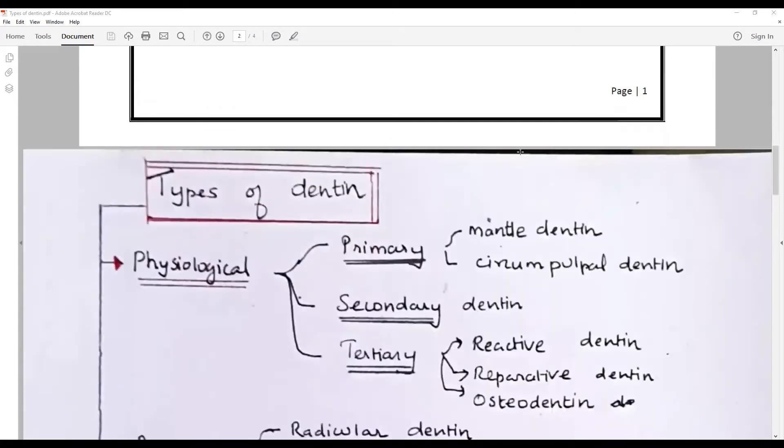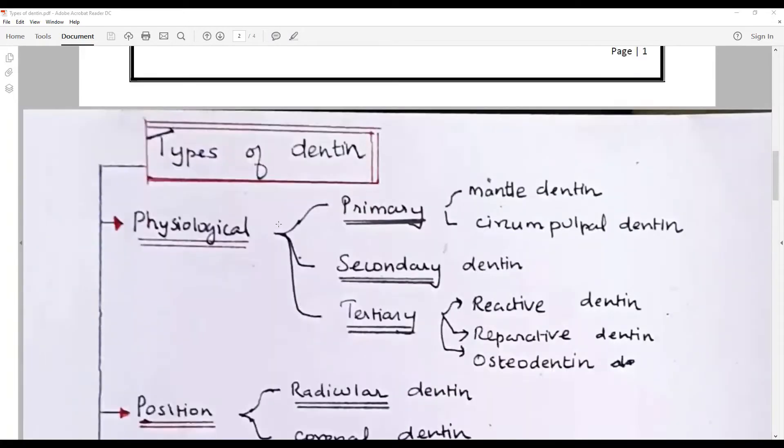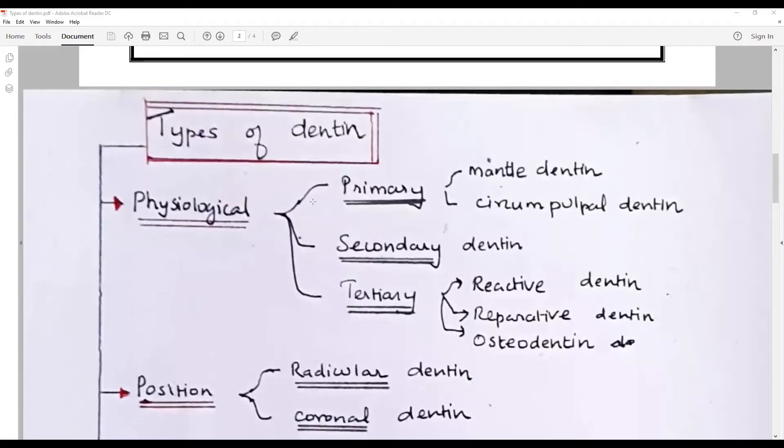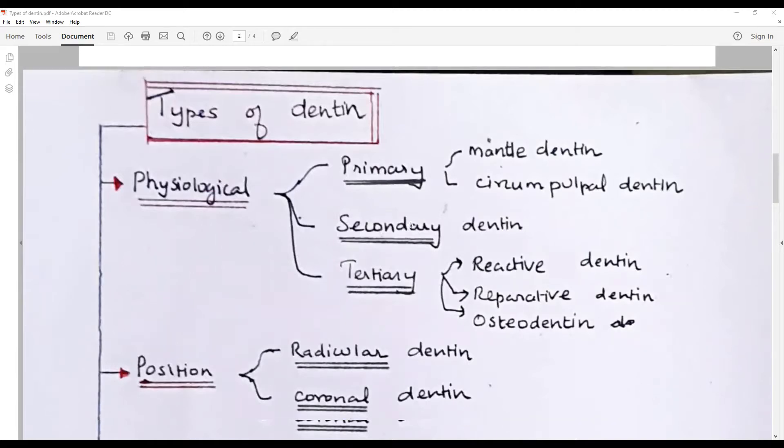Types of dentin depending upon the physiological time of formation: it could be classified as primary, which has mantle and circumpulpal dentin; secondary dentin; and tertiary dentin. Primary and secondary dentin is classified based upon the root completion status. Tertiary dentin is the reactive dentin, reparative dentin, and osteodentine, the type of response it provides with the noxious stimulus.